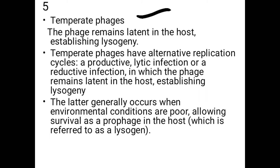Temperate phages remain latent in the host, establishing lysogeny. These temperate phages have an alternative replication cycle — a latent infection or reductive infection — in which the phage remains latent in the host, establishing lysogeny. This generally occurs when environmental conditions are poor, allowing survival as a prophage in the host, which is repressed to a lysogenic state.